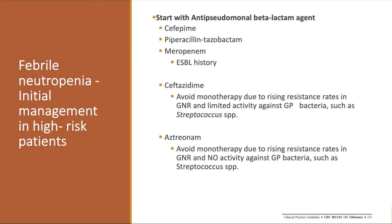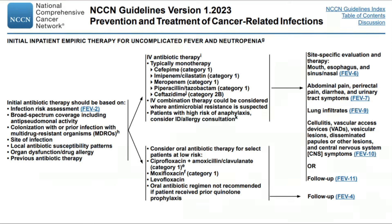The NCCN 2023 guidelines table concisely covers initial antibiotic therapy and suggested diagnostic workup based on the site or presumed site of infection. For a patient with abdominal pain and concern for colitis, expand the initial regimen to include gram-negative, gram-positive, and anaerobic coverage. For lung infiltrates, assess for invasive fungal infection — workup generally includes advanced imaging such as CT scan plus or minus bronchoscopy.